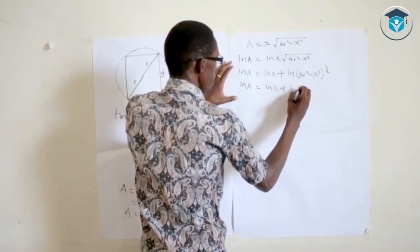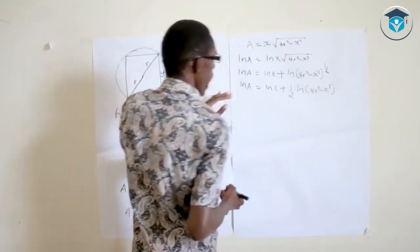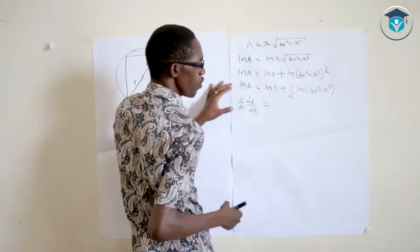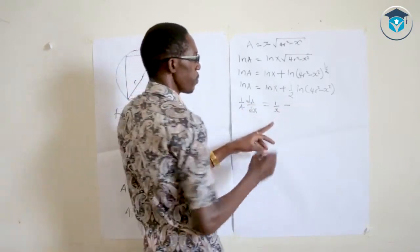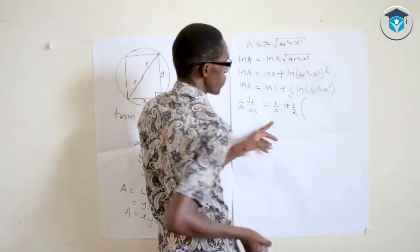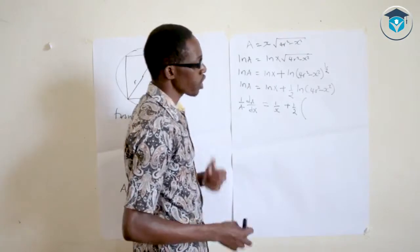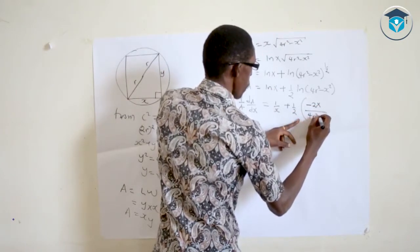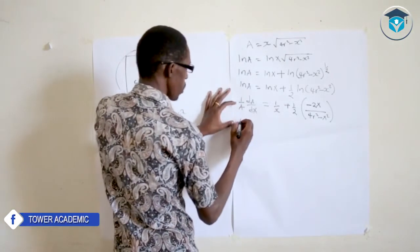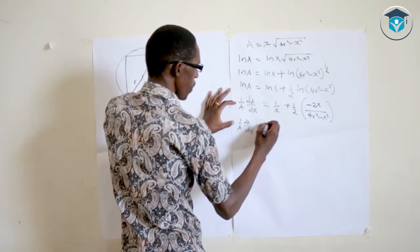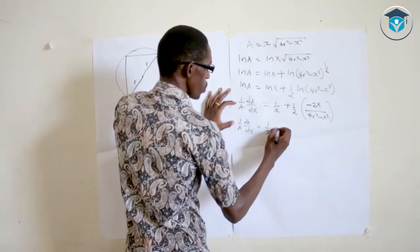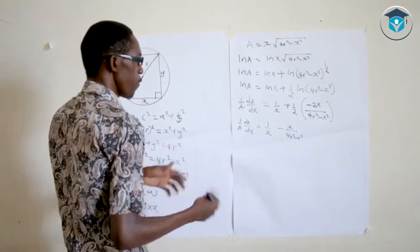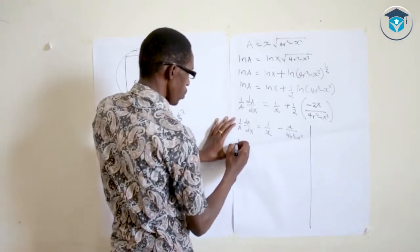Differentiating both sides with respect to x: (1/A) · dA/dx = 1/x + ½ · (−2x)/(4r² − x²). The constant 4r² differentiates to zero, and differentiating −x² gives −2x. This simplifies to (1/A) · dA/dx = 1/x − x/(4r² − x²).